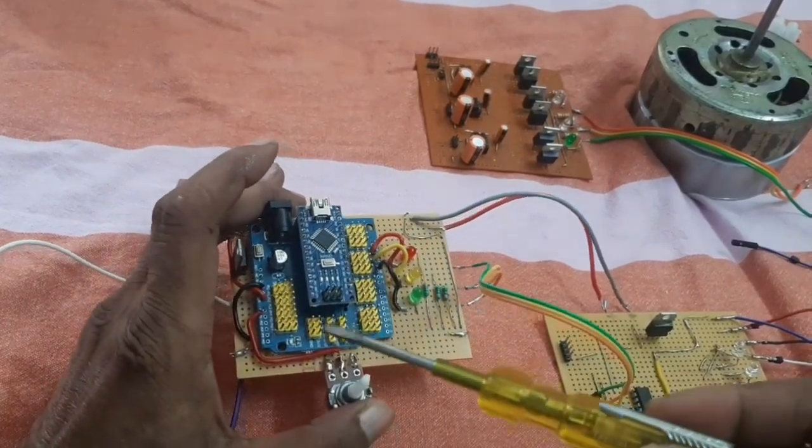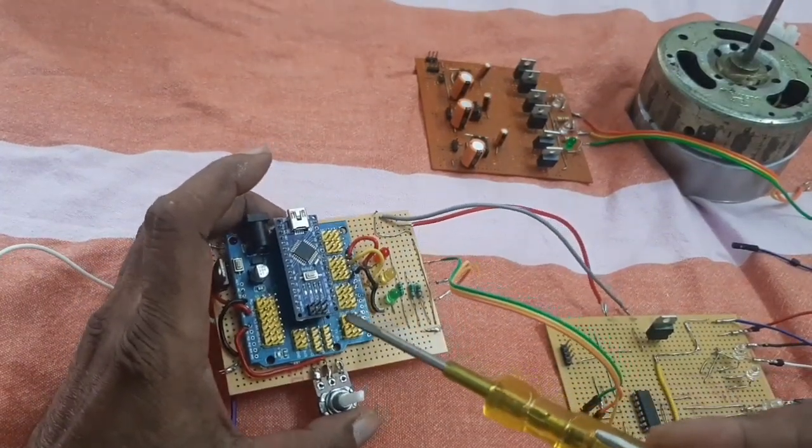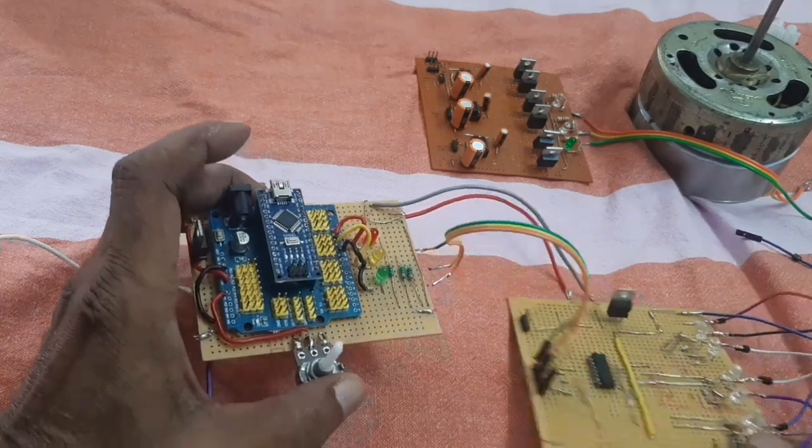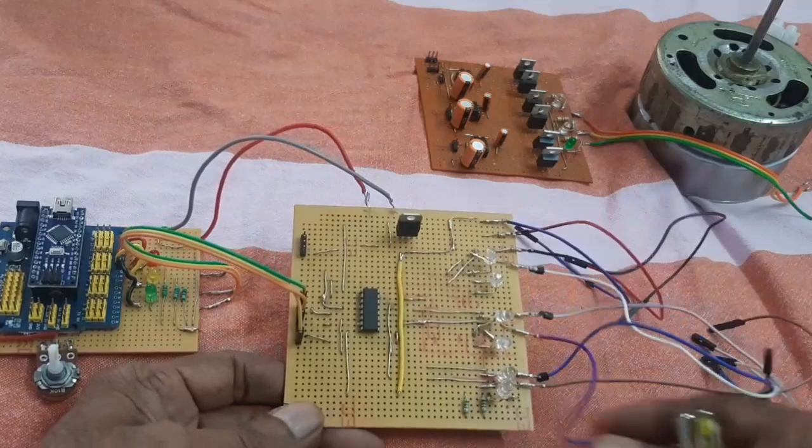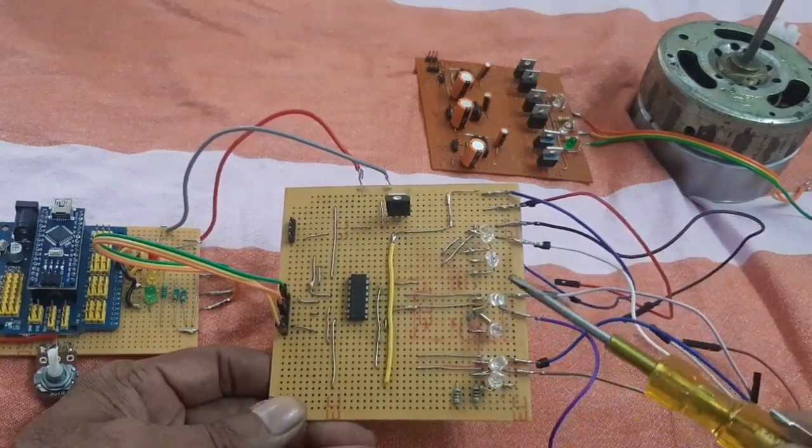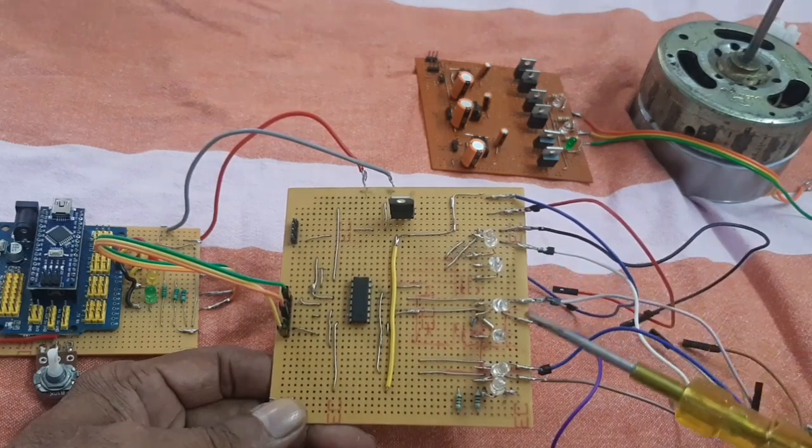This is the Arduino Nano. It is used to generate the three-phase signal. Here the three-phase signal is converted to the six output that means three high and low signal.